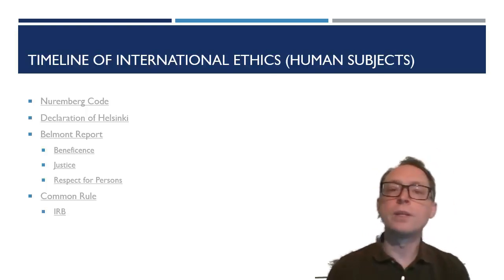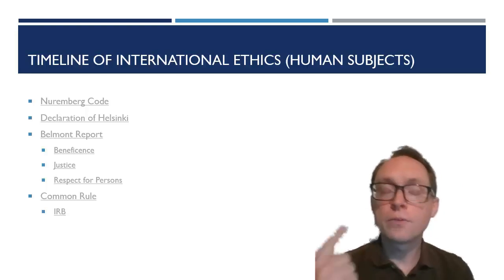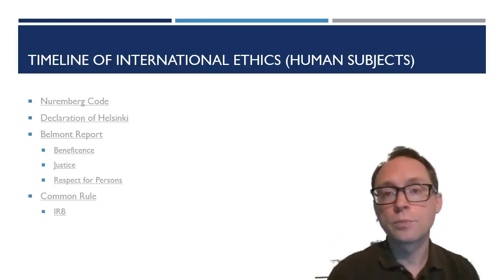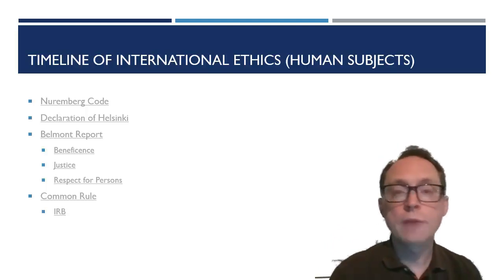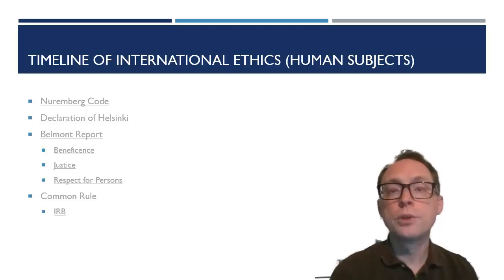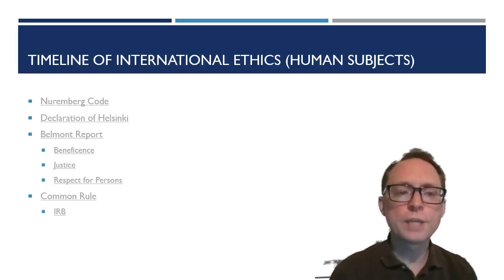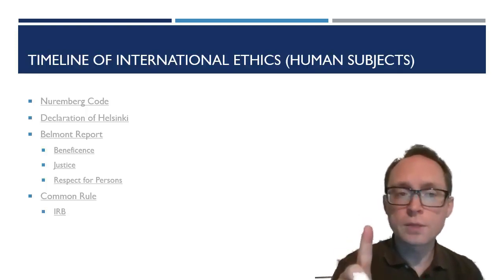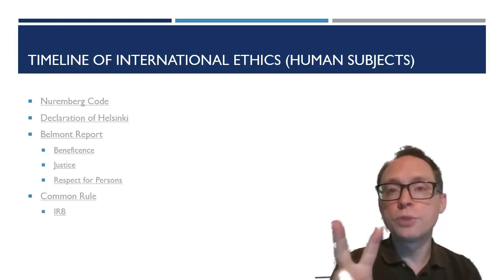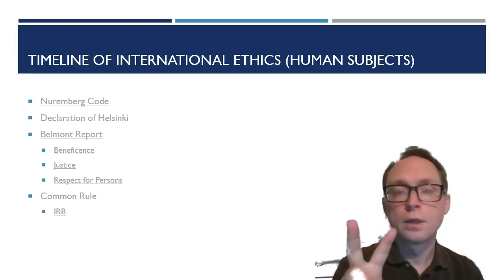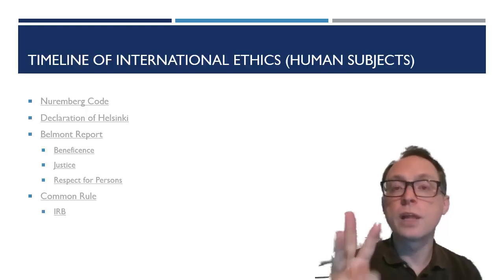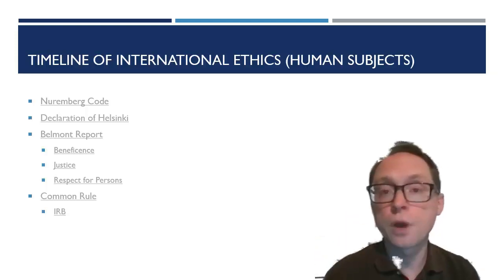Respect for persons is more about individual rights — things like confidentiality and consent. When you participate in a study, you must consent to be in it, and your information must be kept confidential wherever possible. So to summarize: beneficence asks whether the benefit outweighs the cost; justice asks whether any group is being unduly used in this research; and respect for persons addresses individual rights such as consent, confidentiality, and freedom to withdraw whenever you want.